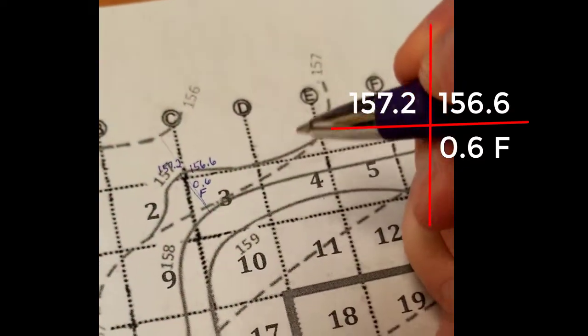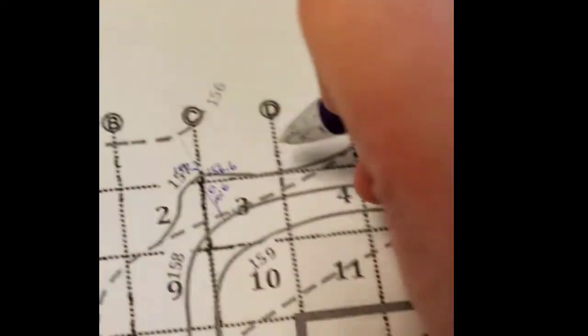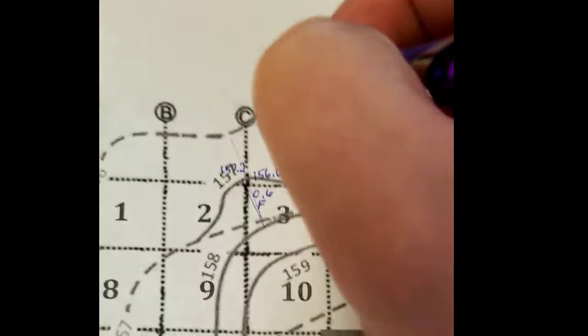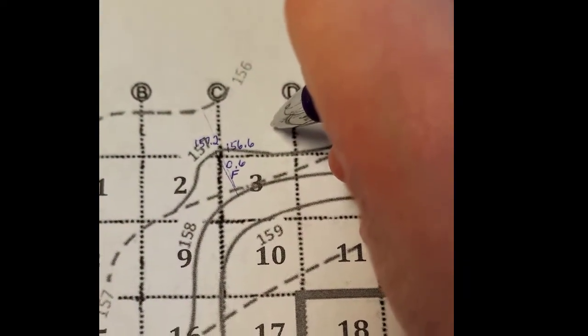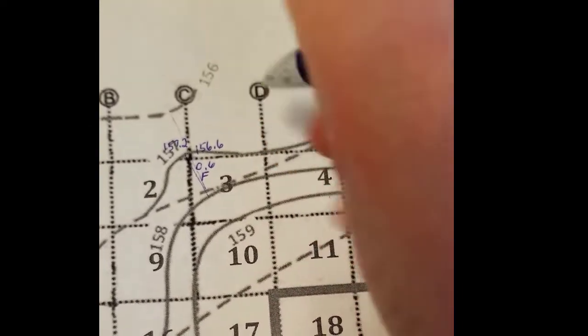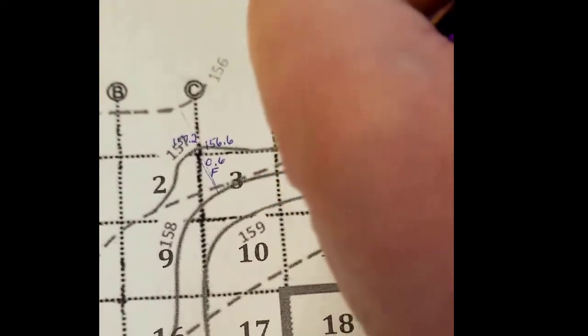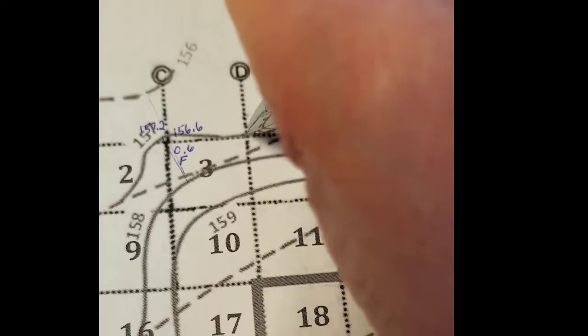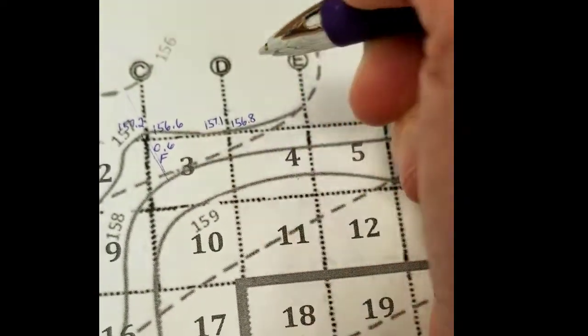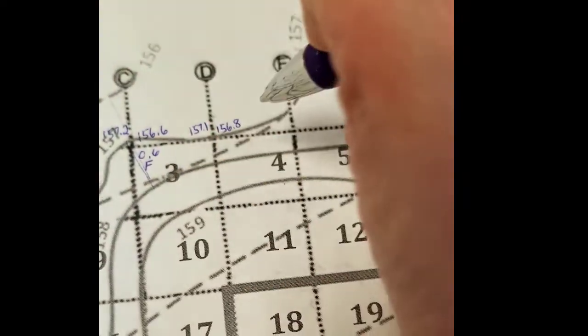And then I do the same thing for the other side. Dotted to dotted, this is 156.5. I'm going to say that's 156.8. It is barely off of that 157 but it is. So that's 157.1. So what's the difference between them? 0.3 fill.